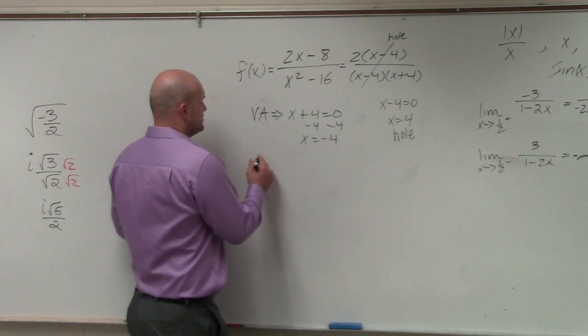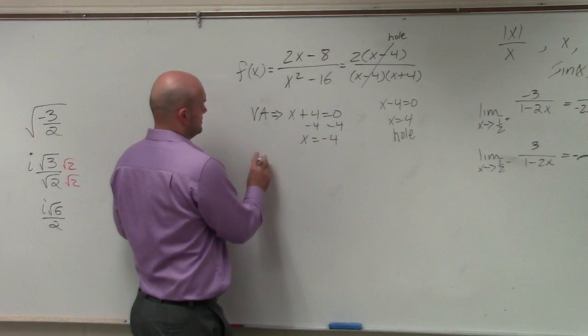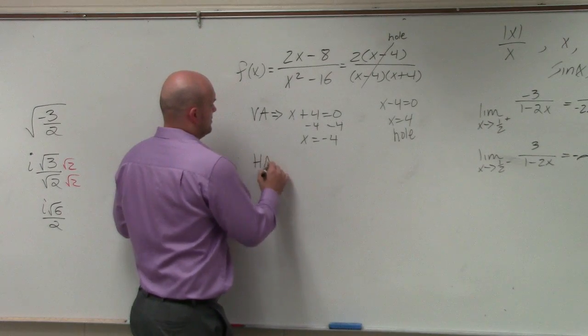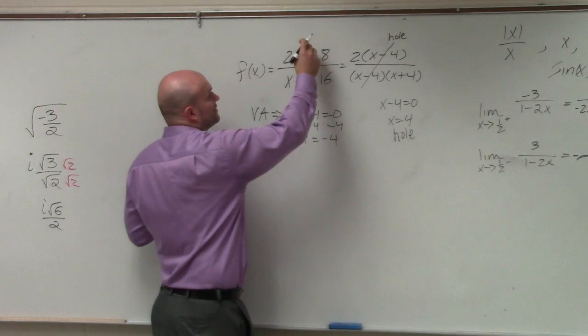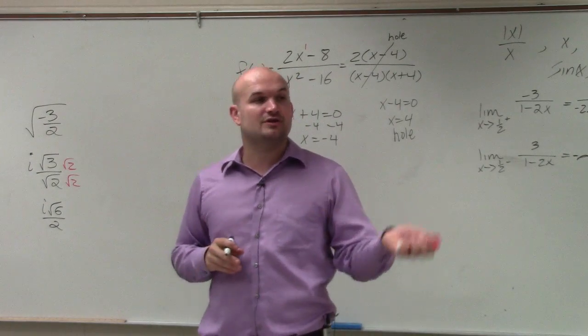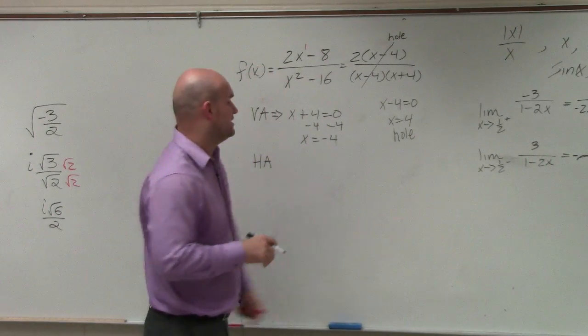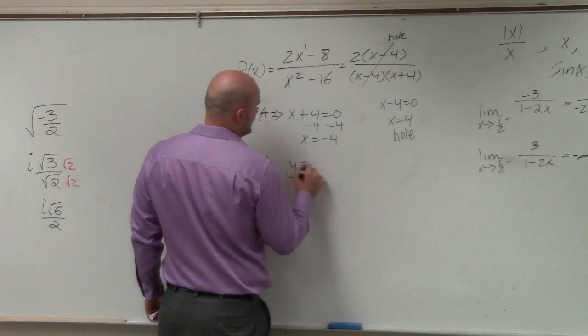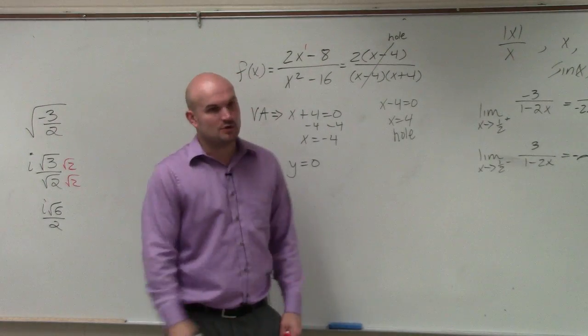To find the horizontal asymptote, we compare the degree in the numerator compared to the degree in the denominator. Remember, whenever the degree in the denominator is greater than the degree in the numerator, y equals 0 is your horizontal asymptote. Done.